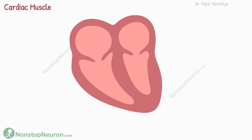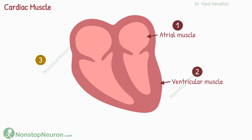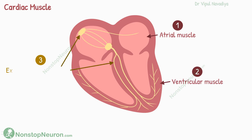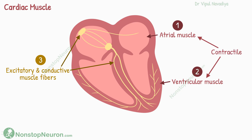The cardiac muscles are basically of three types: atrial muscle, ventricular muscle, and excitatory and conductive muscle fibers. Atrial and ventricular muscles, as per their name, constitute the atria and ventricles respectively. They are the main contractile muscles in the heart.